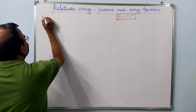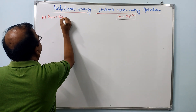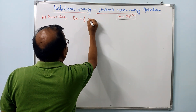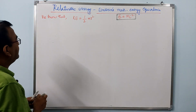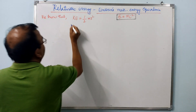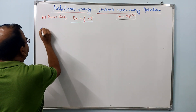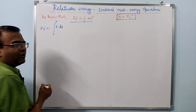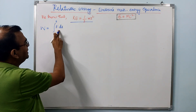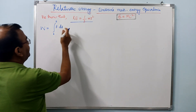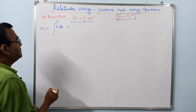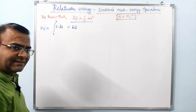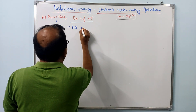We know that in classical mechanics, the kinetic energy of an object moving with velocity v is given by the expression ½mv². This expression can be arrived at from the work done to move an object through a distance s, by integrating the product of the force that moves that object through a differential distance ds. The integral of F·ds gives the work done, and this work done equals kinetic energy, provided the object was originally at rest.